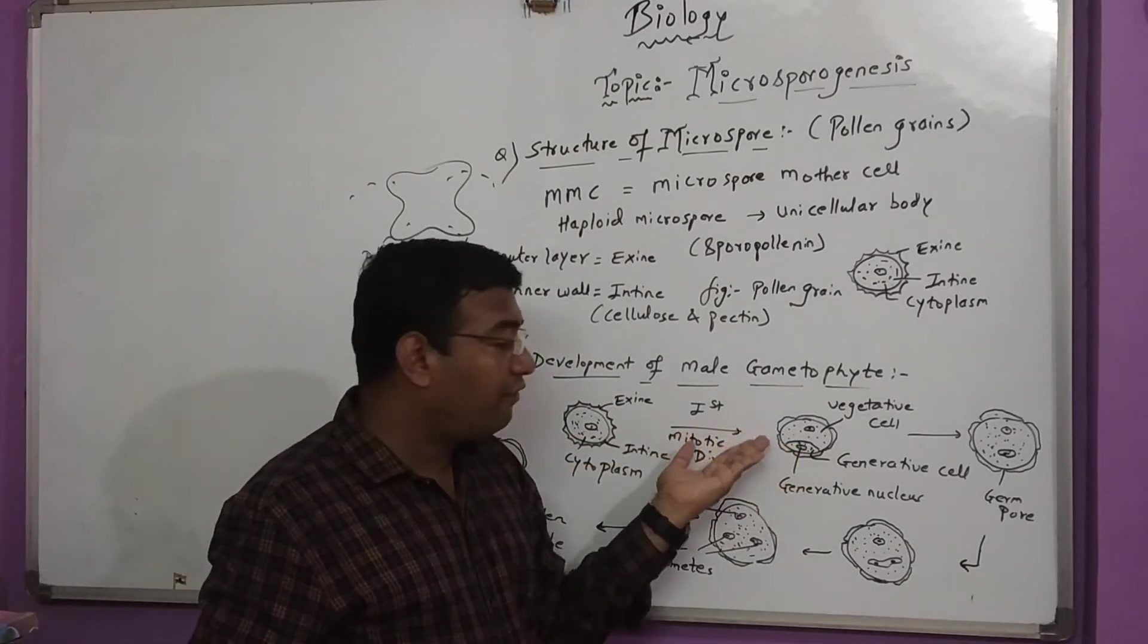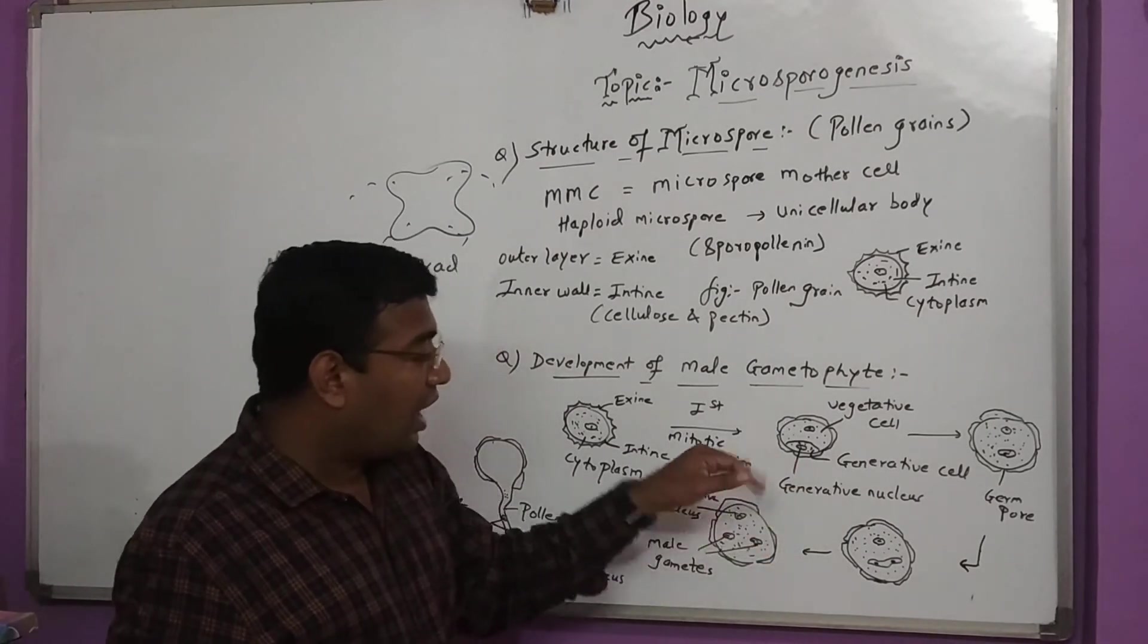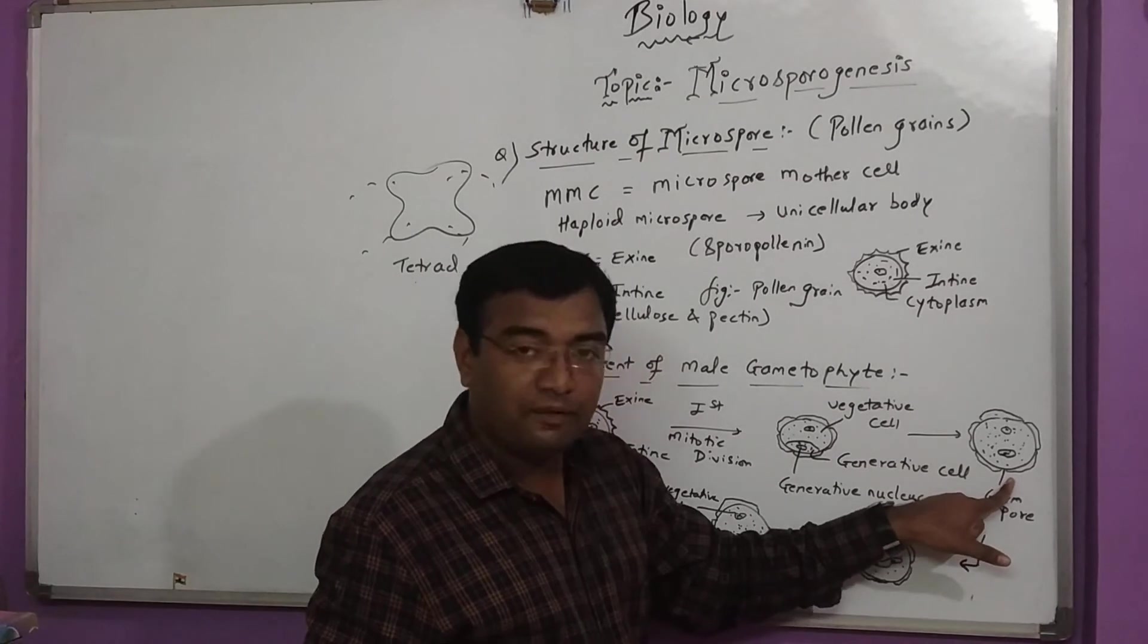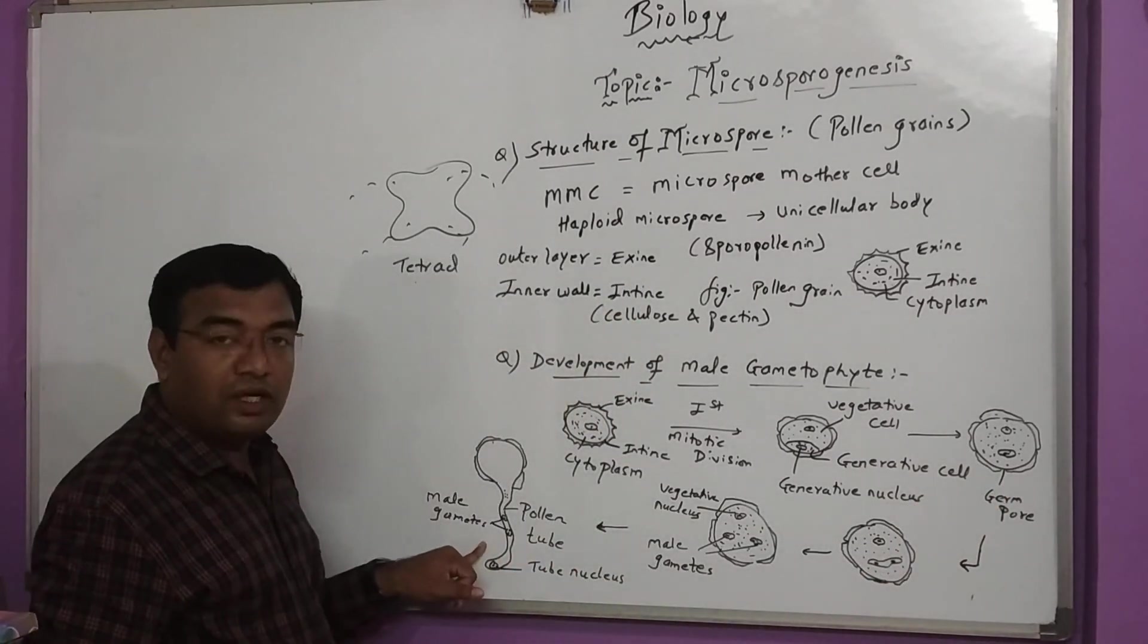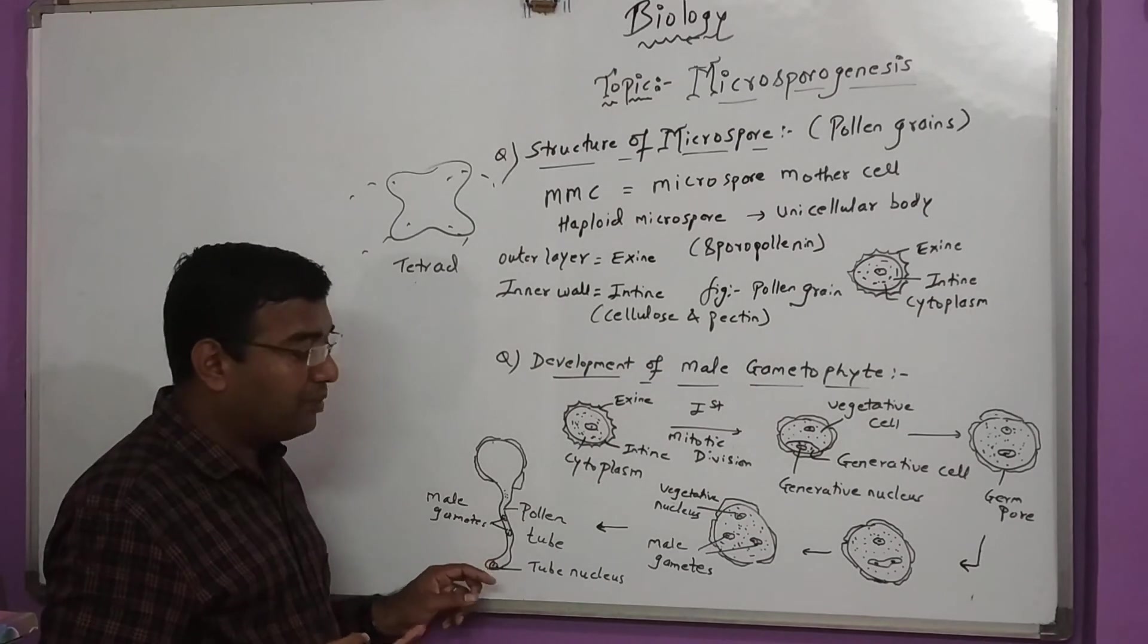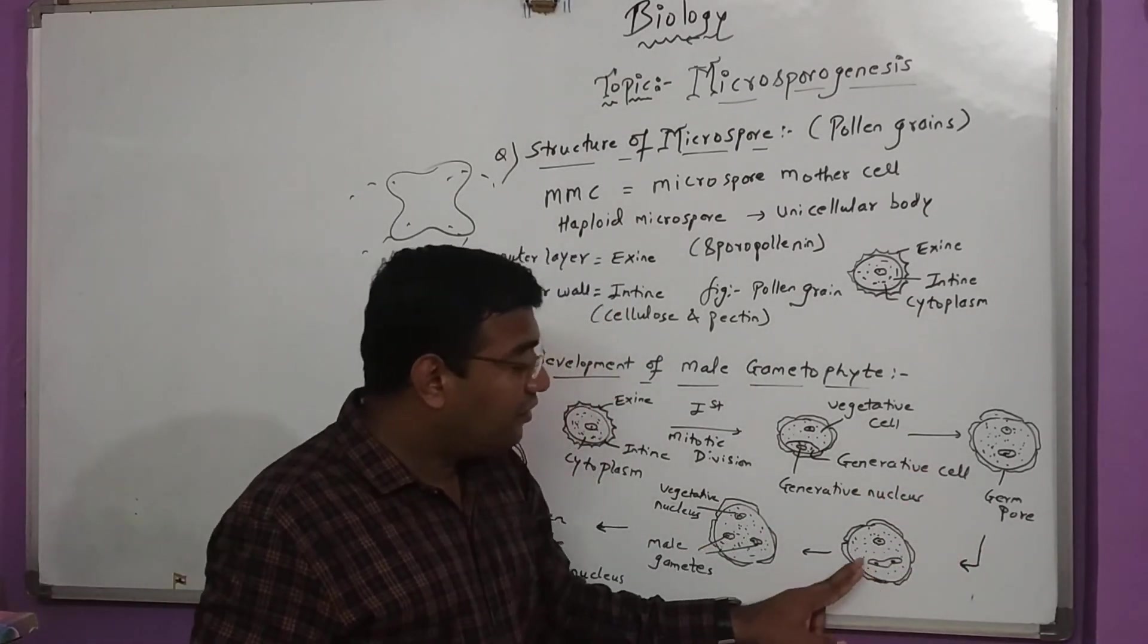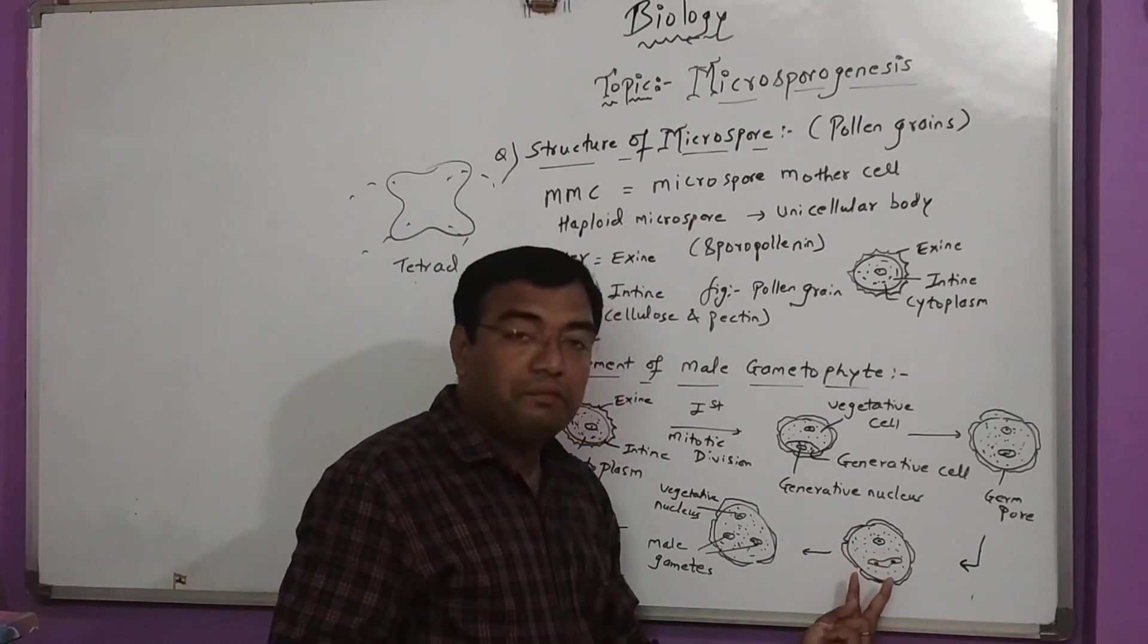After the second mitotic division, you can see the germ pore. The germ pore develops into a pollen tube. This germ pore is a small opening where pollen tube formation occurs, which helps in fertilization. In the coming stages, the generative cell forms two different male gametes.